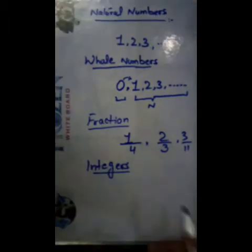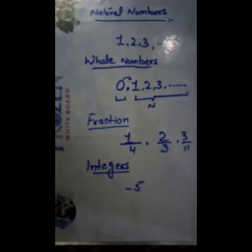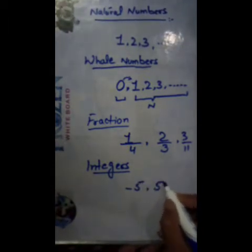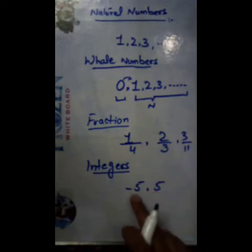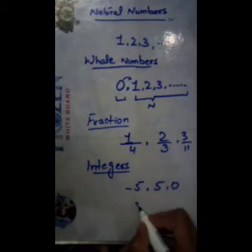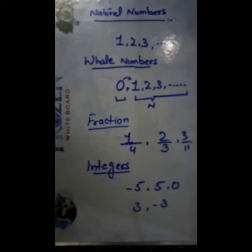Let's know about Integers. Dear students, 0 and all Natural Numbers along with their negatives are called Integers. If we write minus 5, it is an Integer. If we write 5, it is also an Integer because it is also a Natural Number. Numbers with a positive sign or negative sign are Integers, and 0 is also an Integer. So 3 is an Integer, minus 3 is an Integer, 4 is an Integer — all these types of numbers are called Integers.